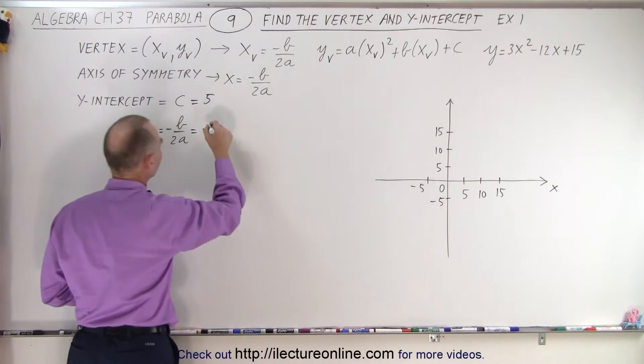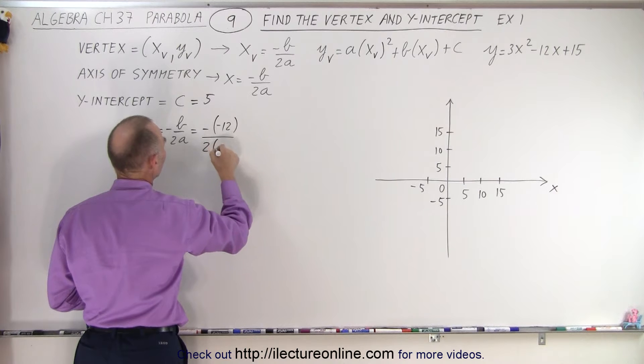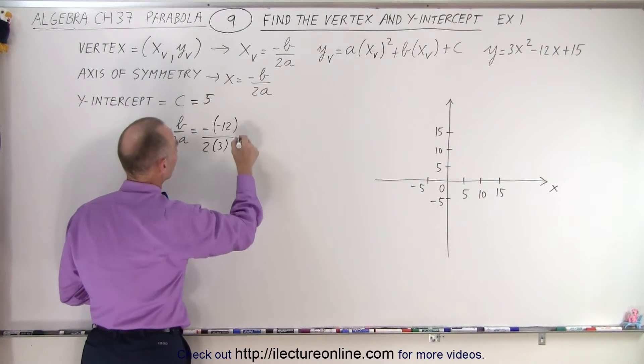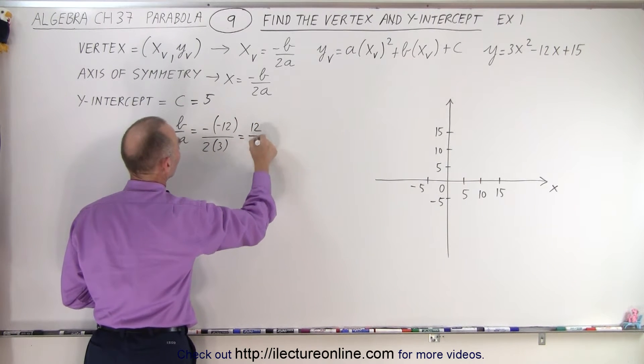in this case b is -12, divided by 2 times a, which is 3. So this becomes 12/6, which equals 2.